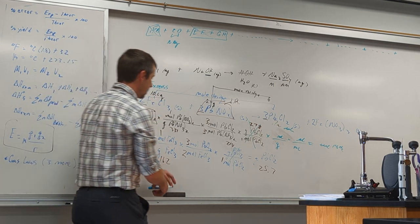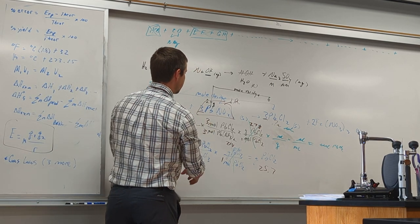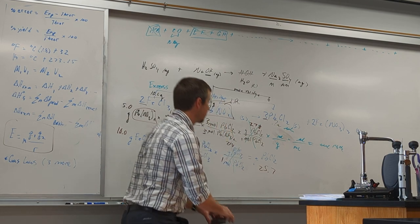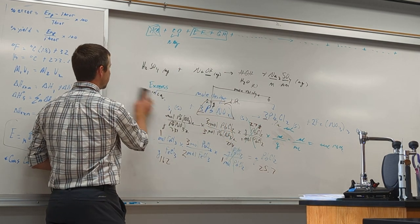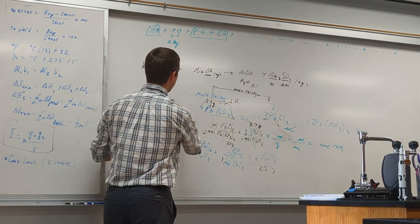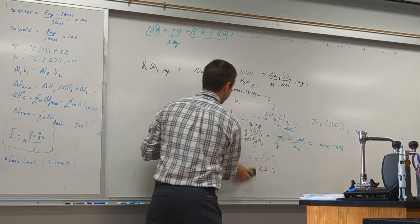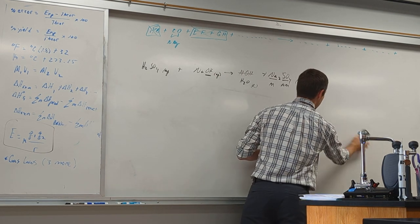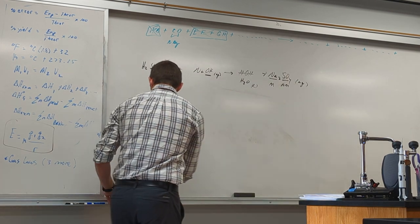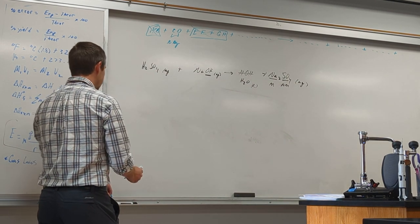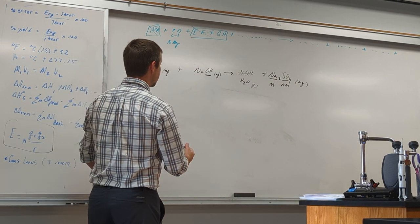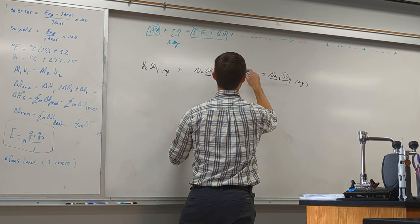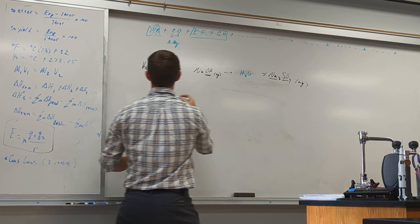Let's do one more example using milliliters and molarity — the previous one was mass-to-mass. Volume times molarity gives you moles. And if you have moles, get to the mole bridge.